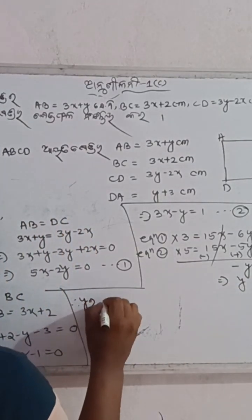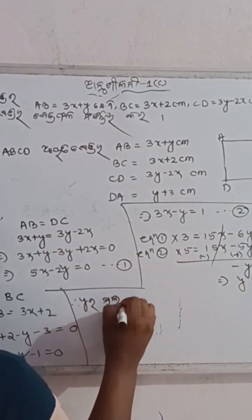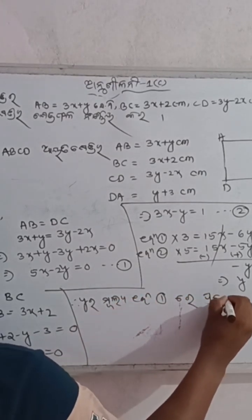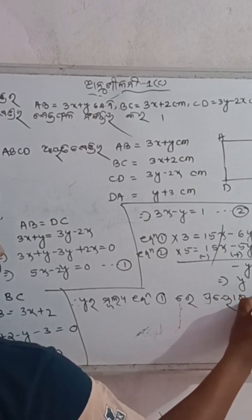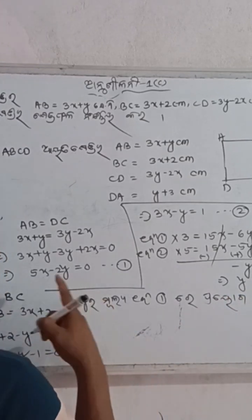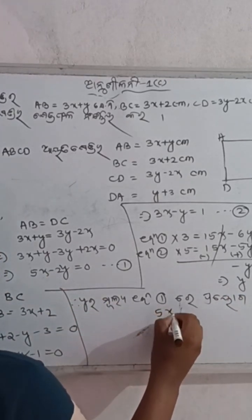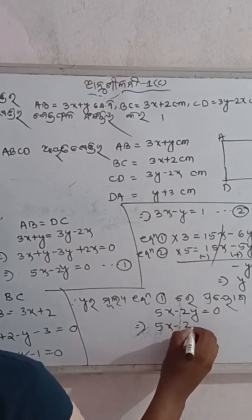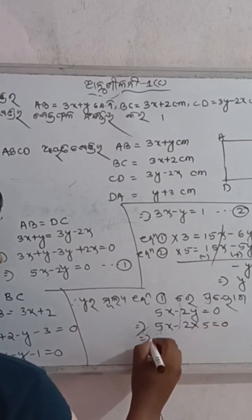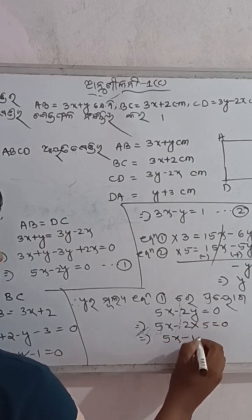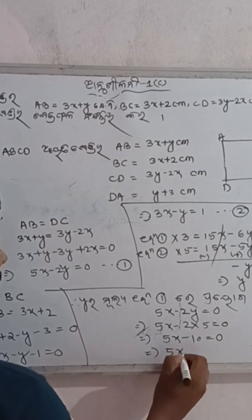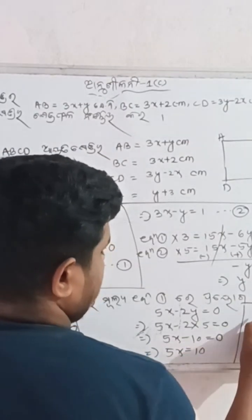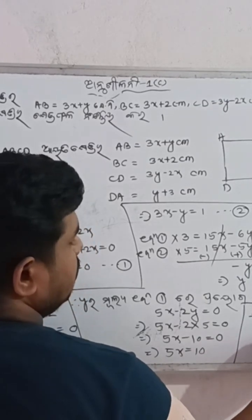Now I will move to Y. If I will move to Y, I will press Y. 2L minus 2Y, I will press Y. This is 5 times 3, you can do 10. This is 6 times 3, 10 by 5.